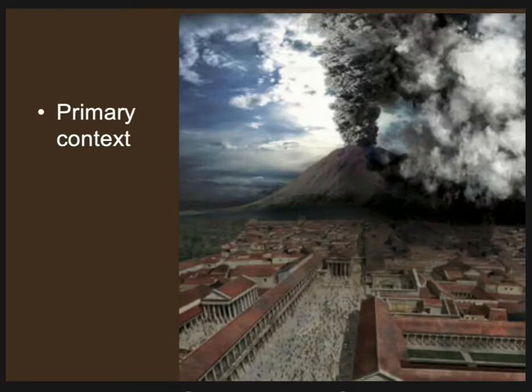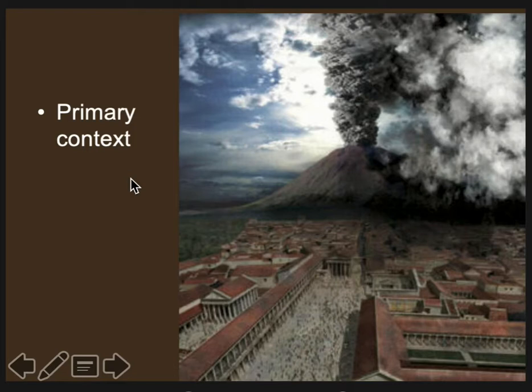The best kind of context is known as primary context. It's the context in which something was used initially, left in place. We talked a little bit about Pompeii and the site of Pompeii. Pompeii is sort of a good example of primary context, because everything was left in place the way it was being used.